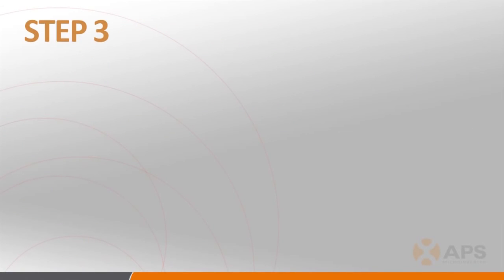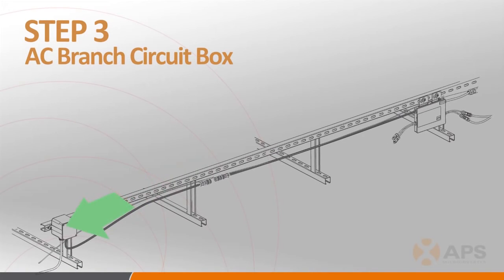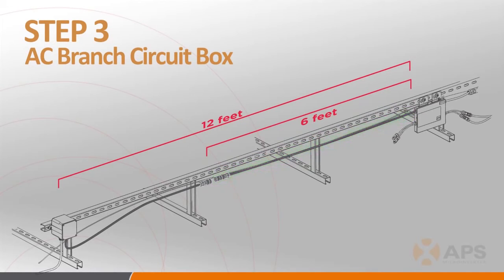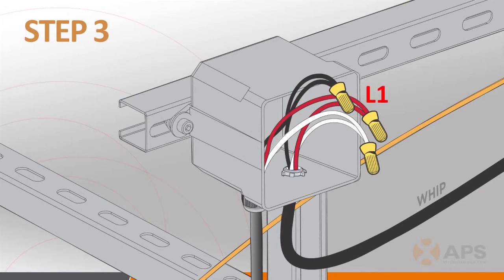Step 3 involves installing the AC branch circuit junction box in a suitable location, as close to the end of a branch of modules as possible. You'll have approximately 12 feet of AC cable to work with — 6 feet of cable associated with the last inverter in the branch, and 6 feet of AC connector cable, sometimes called a WIP. Make sure to wire the conductors correctly: L1 is red, L2 is black, and neutral is white.